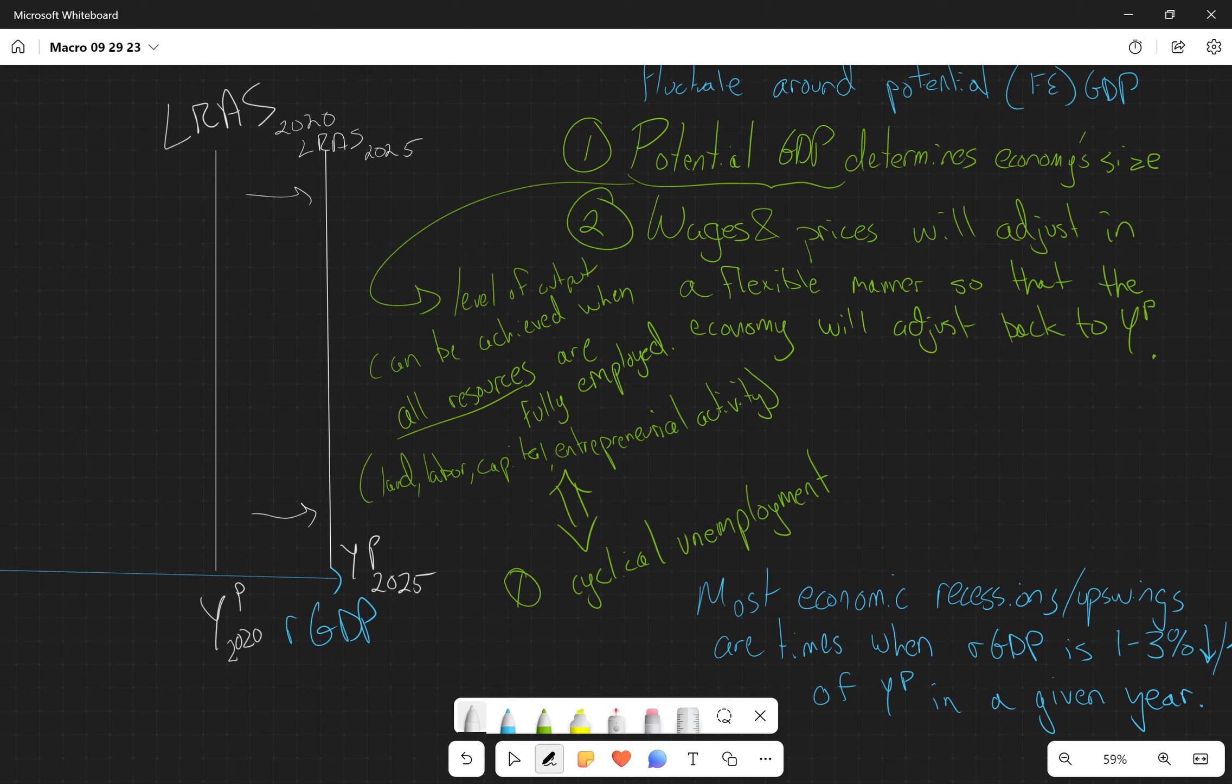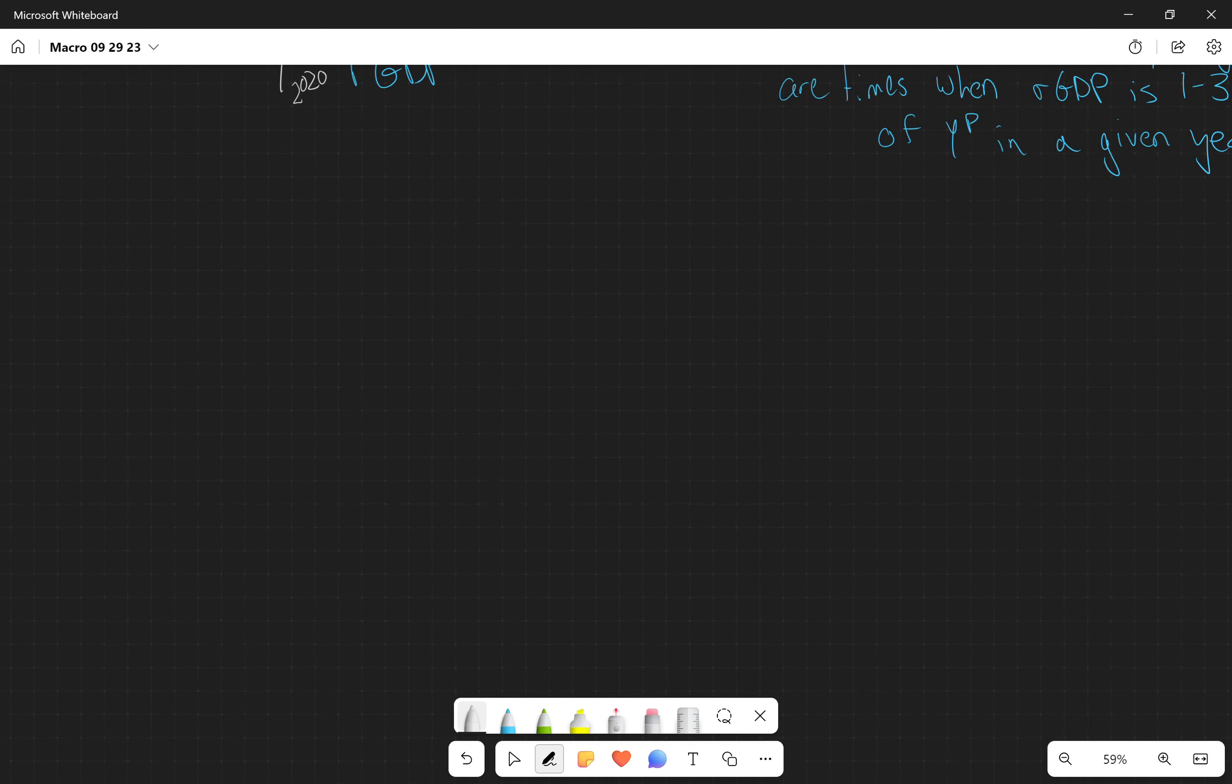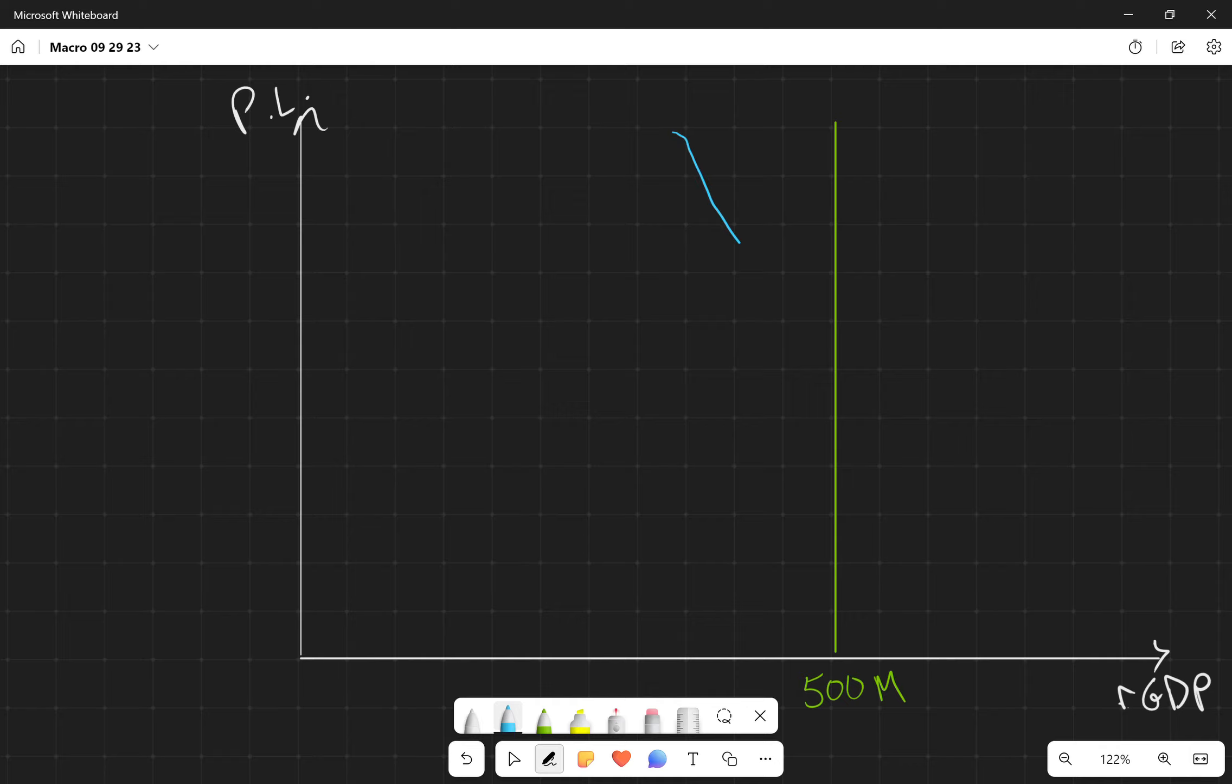So let's talk about this in a graph. We know economics is the diagrammatic representation of reality. We've got price level on the Y-axis. We've got output real GDP on the X-axis. We've got a long run aggregate supply at $500 million. And we've got an initial aggregate demand curve crossing that at a price level of $120 million.